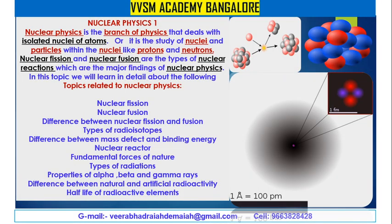Nuclear physics is a branch of physics that deals with the isolated nuclear atom, or it is the study of nuclei and particles within the nuclei, like protons and neutrons. Nuclear fission and nuclear fusion are the types of nuclear reactions which are the major findings of nuclear physics. In this topic, we will learn in detail about the following topics related to nuclear physics in forthcoming classes from VVSM Academy. Topics include nuclear fission, nuclear fusion, and the difference between nuclear fission and nuclear fusion, as well as types of radioactive isotopes.